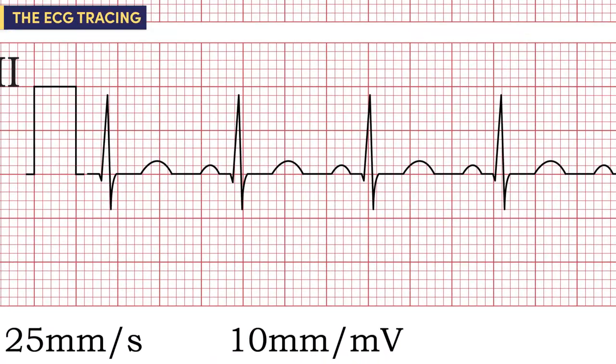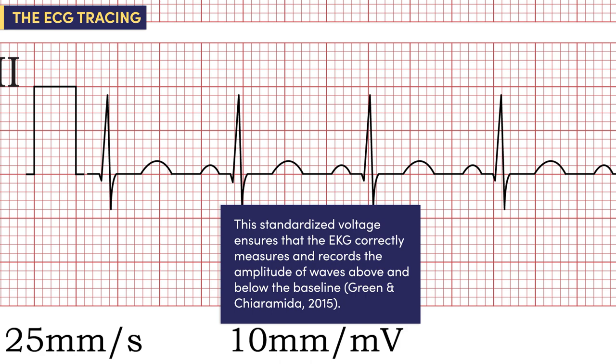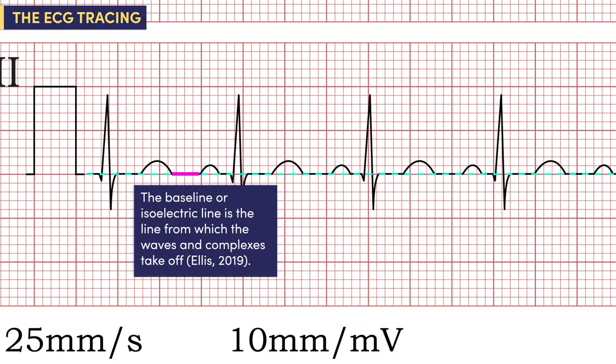Now let's take a closer look at the tracing. This is a standardization mark, also known as a standard calibration signal. A standardization mark can appear at the beginning or end of a tracing and corresponds to the 10 millimeter per millivolt inscription on the ECG. This standardized voltage ensures that the EKG correctly measures and records the amplitude of waves above and below the baseline. The baseline, or isoelectric line, is the line from which the waves and complexes take off.